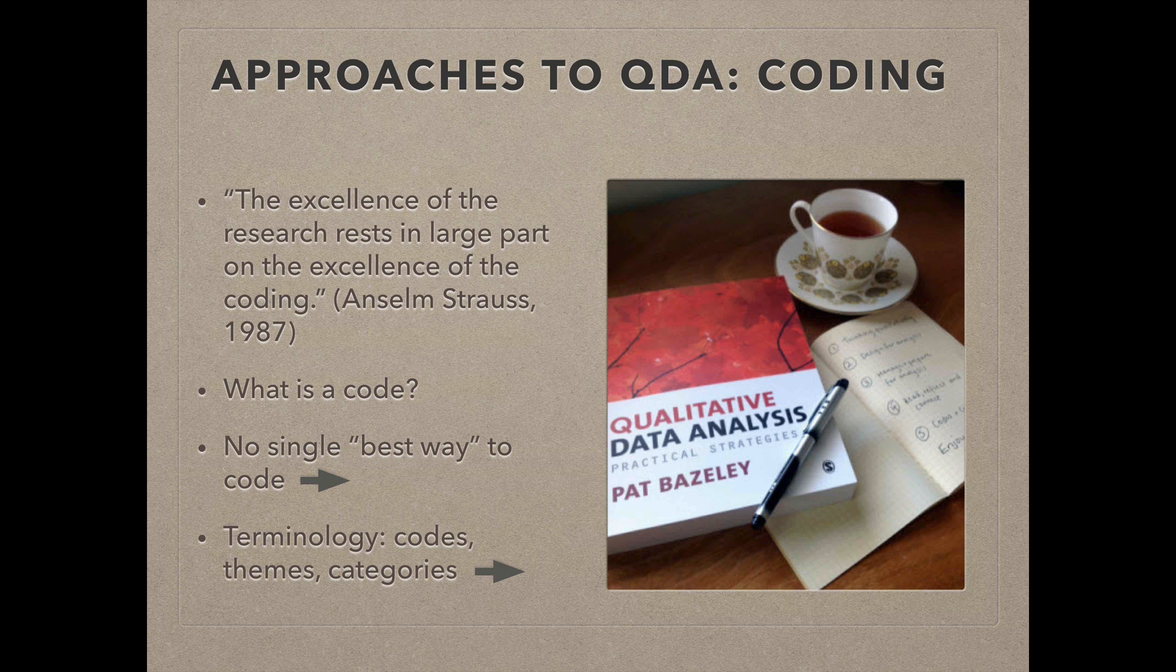So, what is a code and what is the coding process? In a nutshell, a code is most often a word or short phrase that captures or summarizes information contained in specific text data. Coding is the process of combing through your qualitative data, looking for specific themes, ideas, and or categories, and then marking those passages of text with a code so that they can be easily retrieved at a later stage for further analysis.